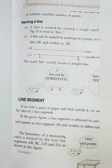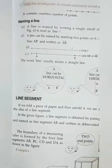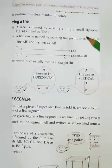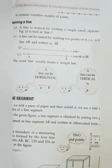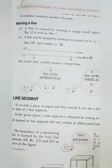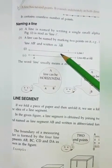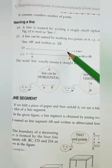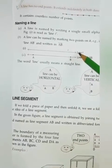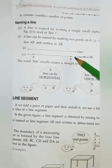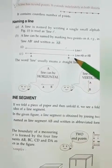Then naming a line. How we name a line? A line is named by writing a single small alphabet by the side of it. For example, the line in figure 1. Suppose this line, it reads as line L. Small l like this you write.